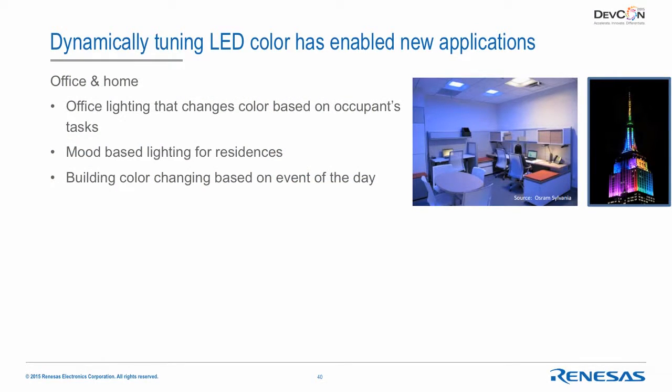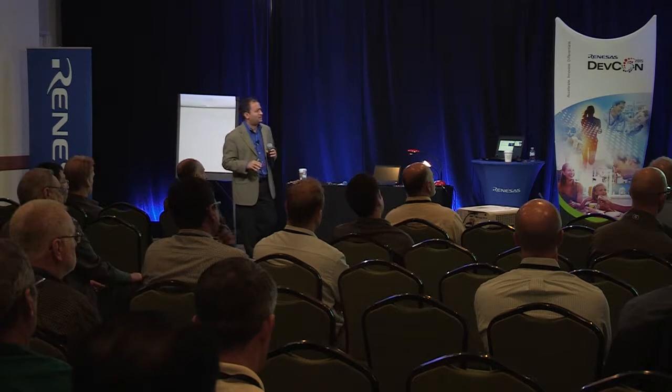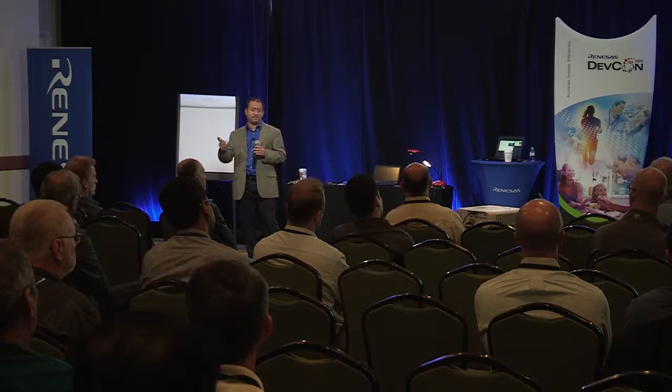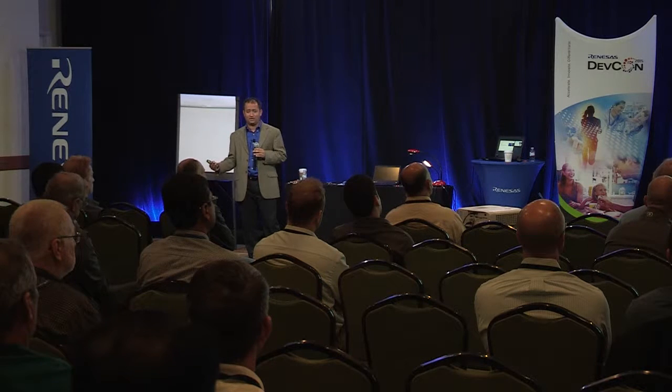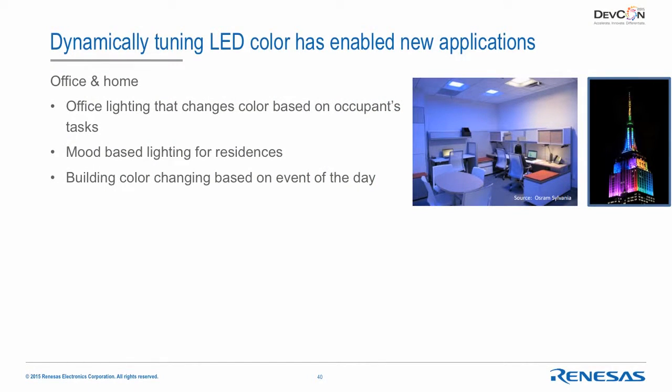LED lighting can produce color directly without filters — a huge advantage. This has created many applications: changing lighting based on task type (bright white for document entry, warm light for discussions), mood-based lighting for residences synced to music, and architectural building color — the Empire State Building has LED lighting on top that can be changed for different events. There are also quite a few startups looking at how to do different mood-based lighting.